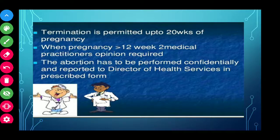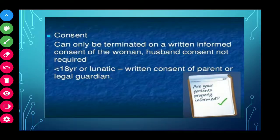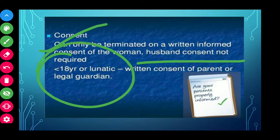Termination is permitted up to 20 weeks of pregnancy. When pregnancy is less than 12 weeks, two medical practitioners' opinion is required. The abortion has to be performed confidentially and reported to the Director of Health Services in the prescribed form. Remember, consent is very important. Without consent, we should not go for MTP. It can be terminated only on a written informed consent of the woman. Remember that husband's consent is not required. For those below 18 years or those who are lunatic, written consent should be taken from parents or legal guardian.